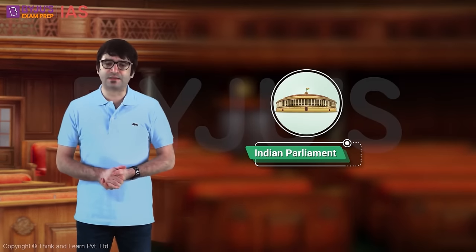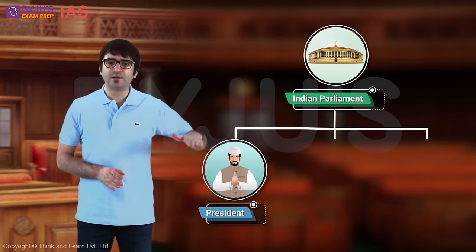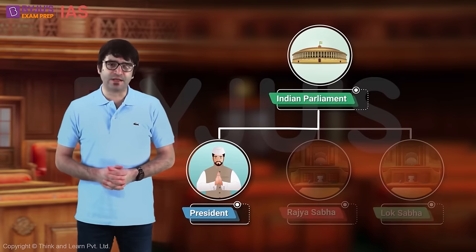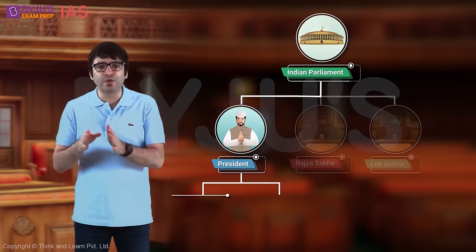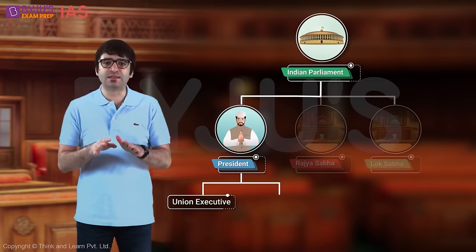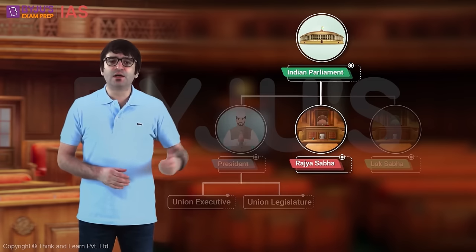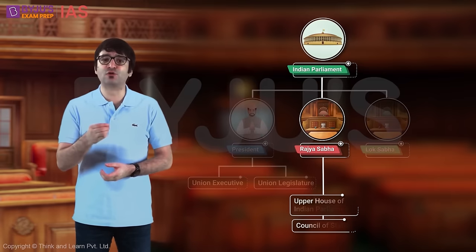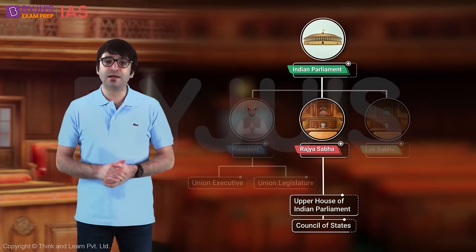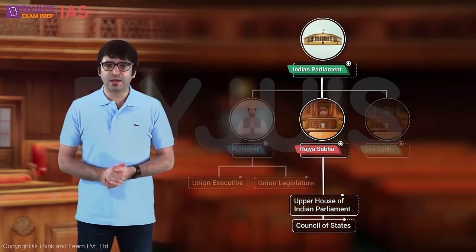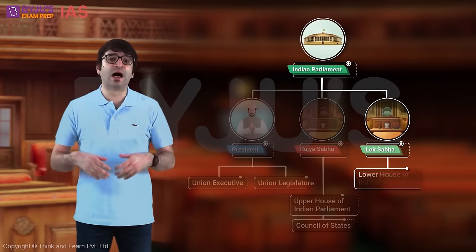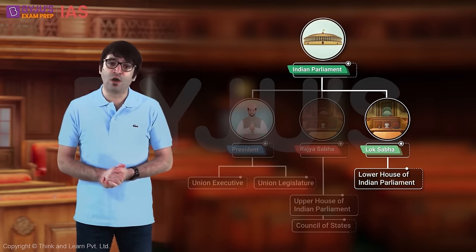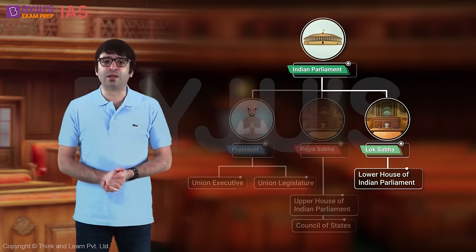Indian Parliament consists of the President, Rajya Sabha, and Lok Sabha. The President of India is an integral part of both the Union Executive as well as the Union Legislature. Rajya Sabha, also known as the House of Elders, is the Upper House of Indian Parliament or the Council of States. Lok Sabha is also known as the House of People, the Lower House of Indian Parliament, or the Popular Chamber of Indian Parliament.